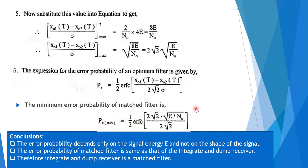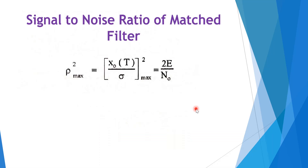The conclusion is that the error probability depends only on the signal energy E and not on the shape of the signal. The error probability of the match filter is the same as that of the integrate-and-dump receiver; therefore, the integrate-and-dump receiver is also known as a match filter. The SNR of the match filter is 2E/N0.